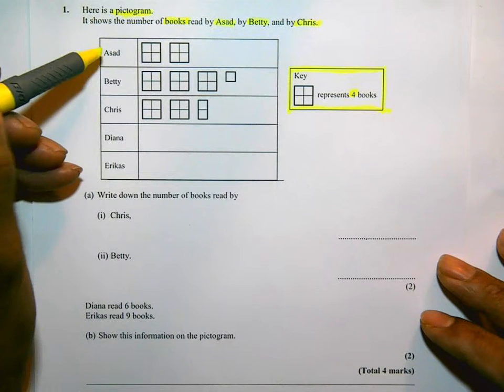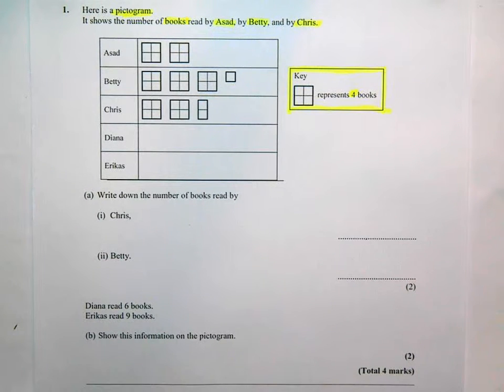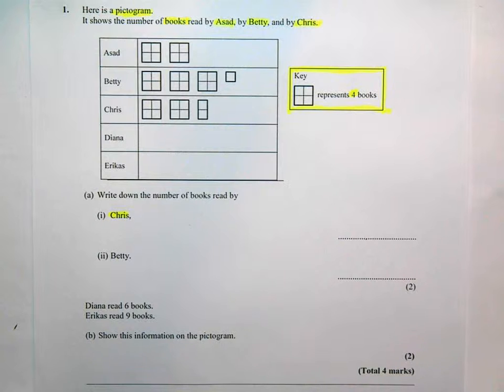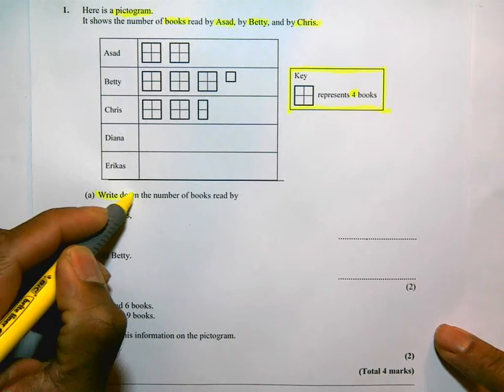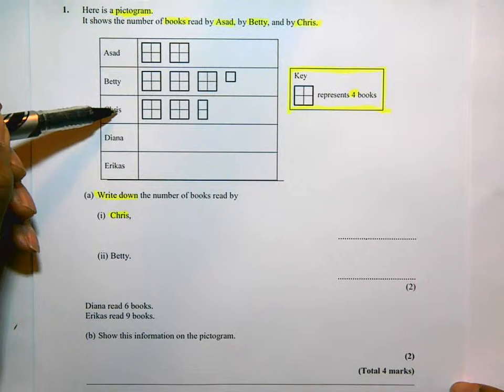So what I want to do is I want to see how many books each of these people read or have read. The first question says, write down the number of books read by Chris. They want to just write it down, and the words write down means you don't need to do any workings, you just write it down. So, how many books did Chris read?